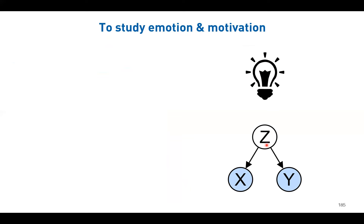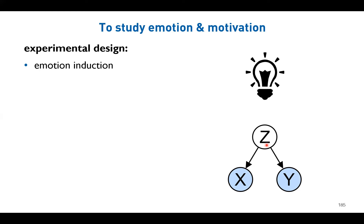Now we know the two concepts: emotion and motivation. We want to study them using experimental tasks in the laboratory. How do we design experiments to induce or manipulate emotion or motivation? One technique is called emotion induction — most often by showing participants videos. Giving participants a comedy will produce very different effects than showing them another genre of movie.